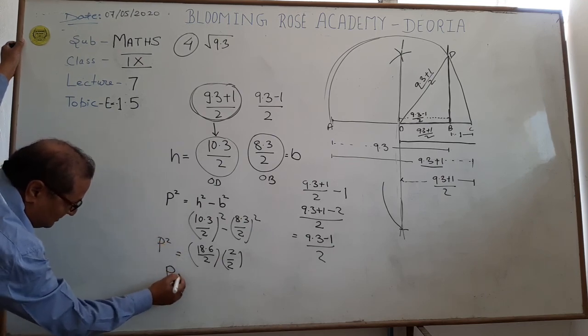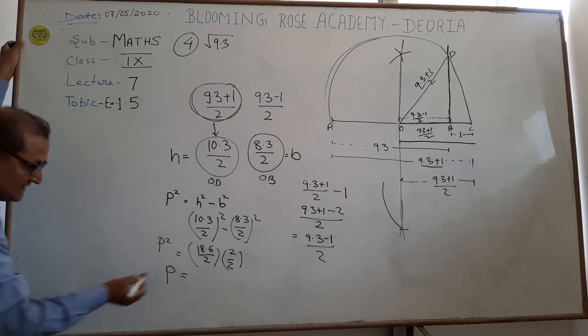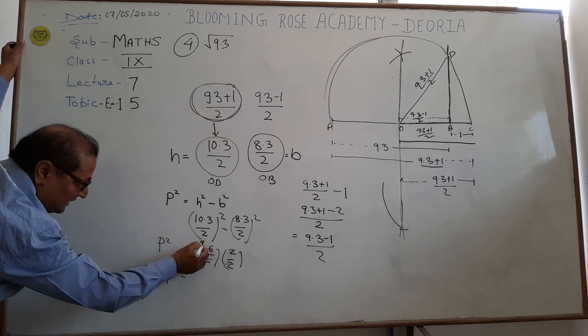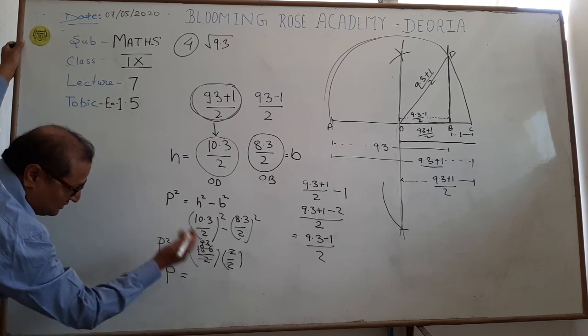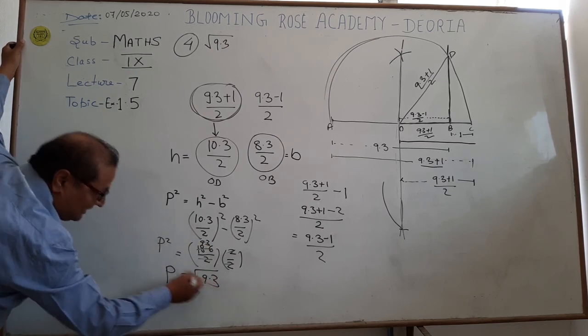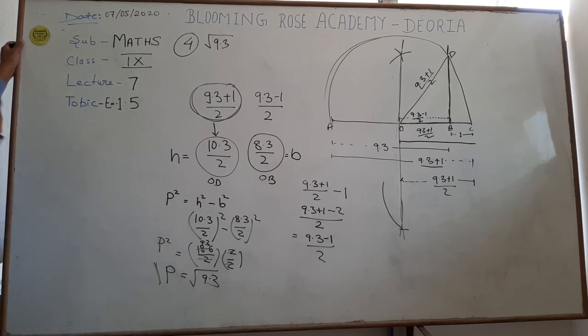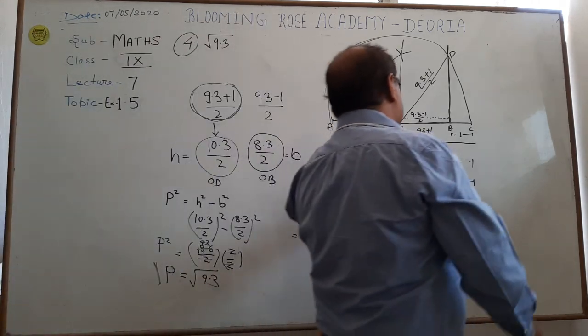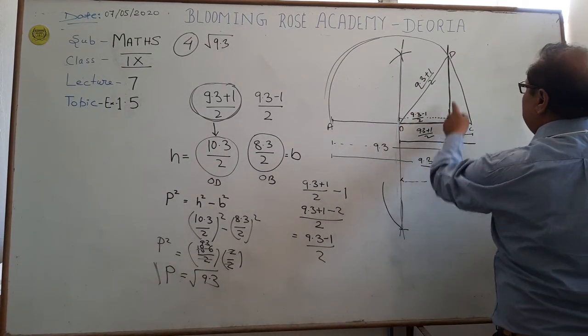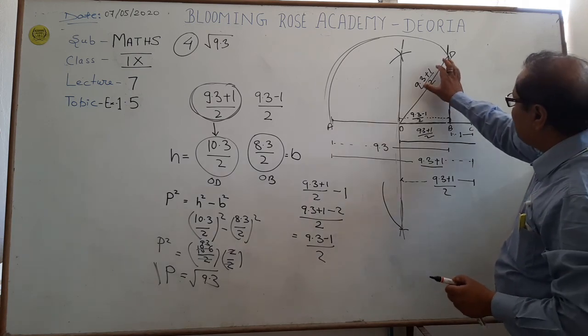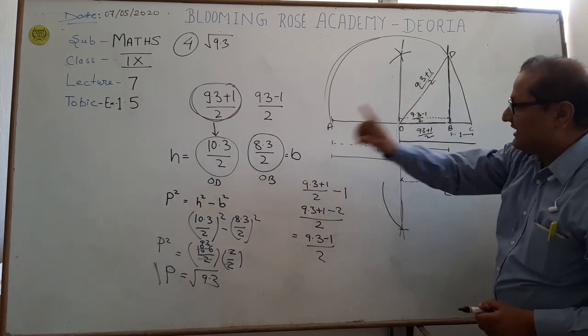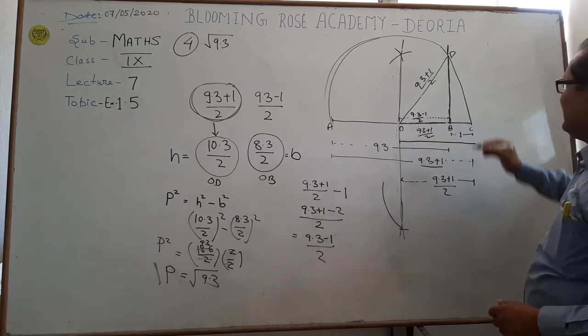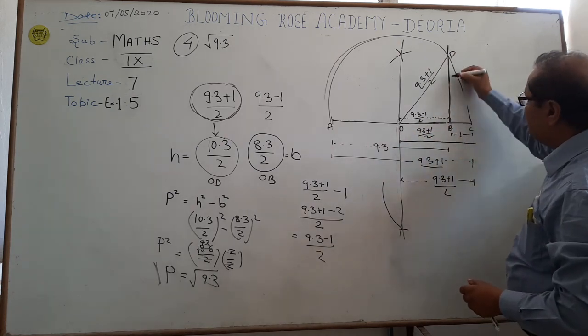If we solve this P, it's only 2 say 2 cancel, we will get 9.3. So, P is equal to root 9.3. Now, this is the P equal to root 9.3.